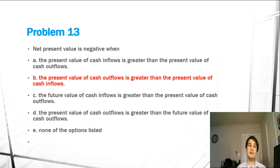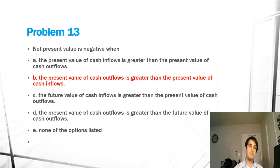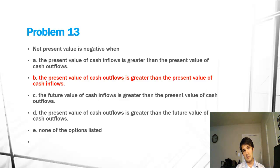The reason it's not C is because the future value of cash inflows is greater than the present value of cash inflows — well, it doesn't matter, because we're not talking about future value, we're talking about present value. So C is not correct. For D, the present value of cash outflows is greater than the future value of cash outflows — this just deals with cash outflows alone, so that is not correct either.